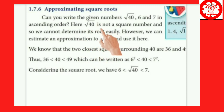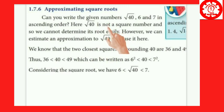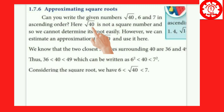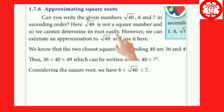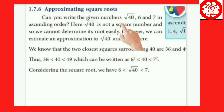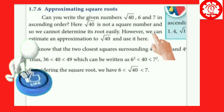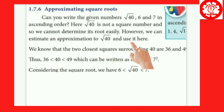Since root 40 is not a perfect square, the direct method is not easy for us. We can use a shortcut method for working out this approximation. We can estimate an approximation to root 40 and use it to place it relative to 6 and 7.